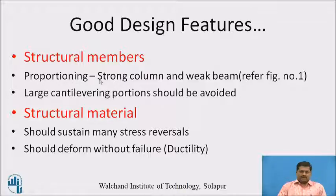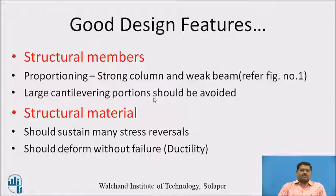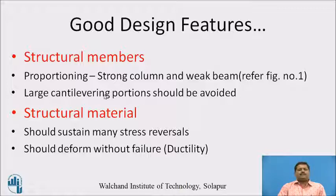Next are the structural members. Regarding proportioning, 'strong column and weak beam' does not mean the beam must actually be weak — it means columns are stronger than beams when proportioning structural members, especially in portal frames. Columns must always be stronger than beams. Additionally, large cantilever portions should be avoided. Cantilever elements like galleries, balconies, and porches are fixed at one end and free at the other, producing greater deflections that are magnified during earthquakes, threatening structural stability.